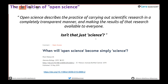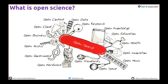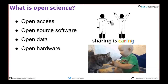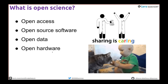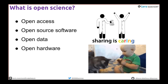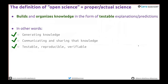There's an article 'When Will Open Science Simply Become Science?' Open science is an umbrella term for lots of different aspects: open data, open hardware, open source software, open access to articles. For us it tends to be a lot about providing open access to your articles, open source software, open data, and open hardware. Sharing is caring — and open science does seem to match that definition of building and organizing knowledge in a form that is testable and reproducible.